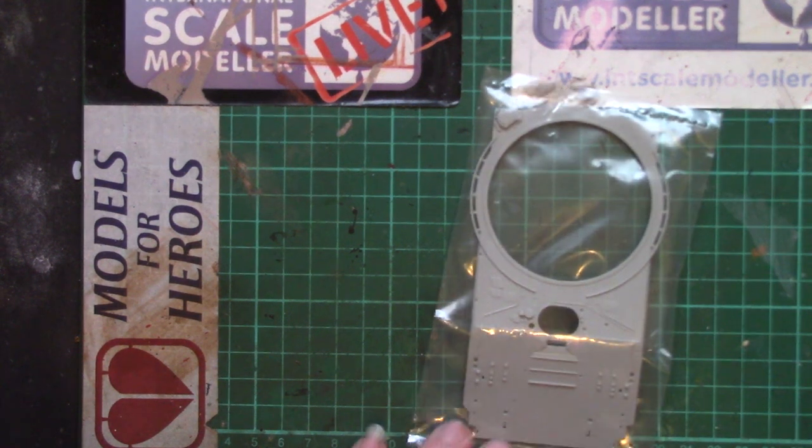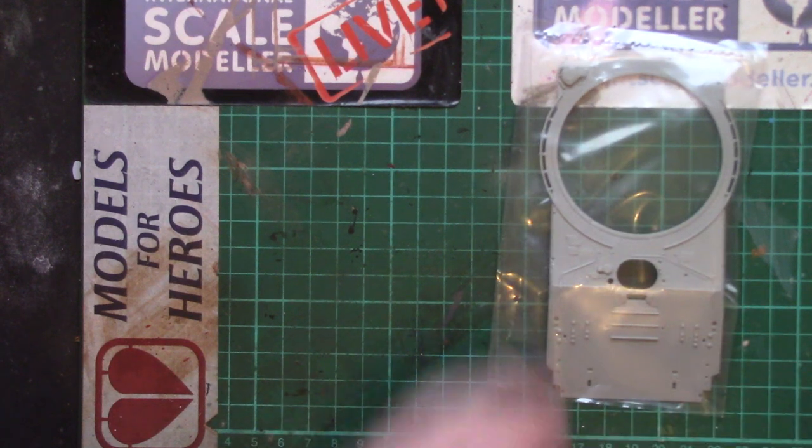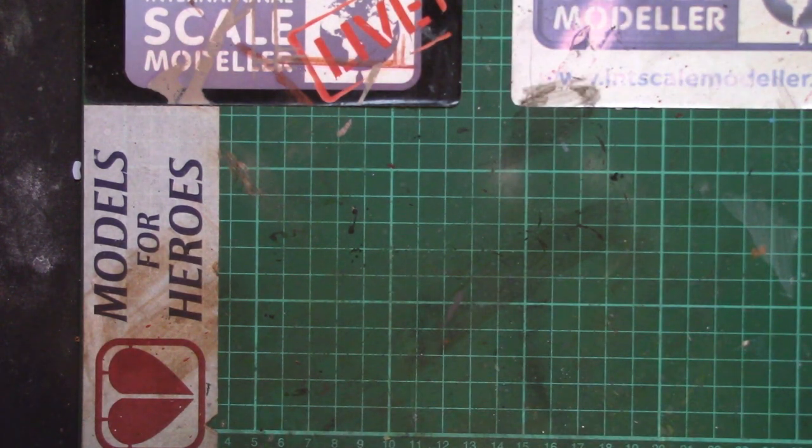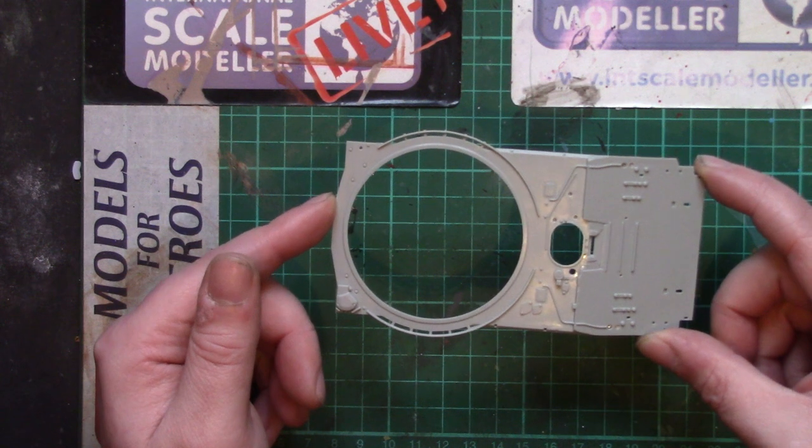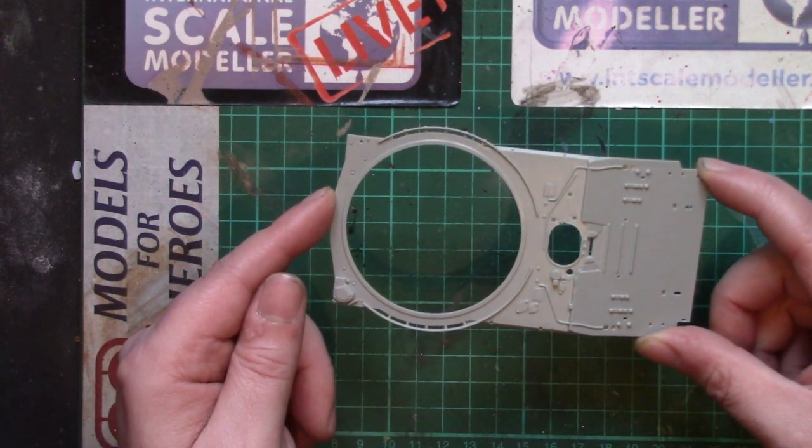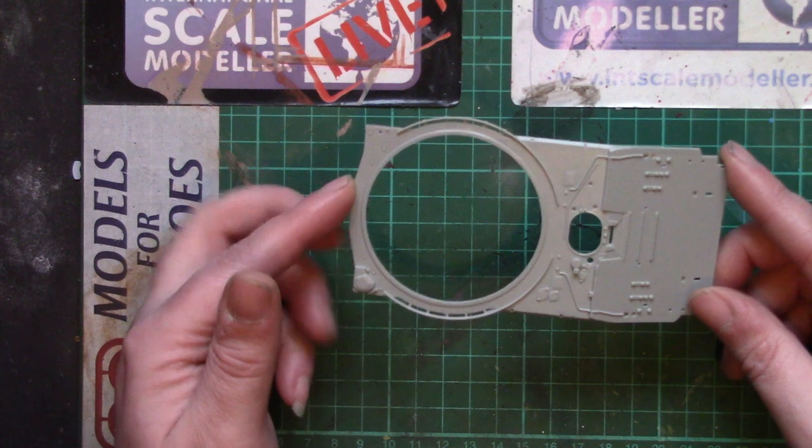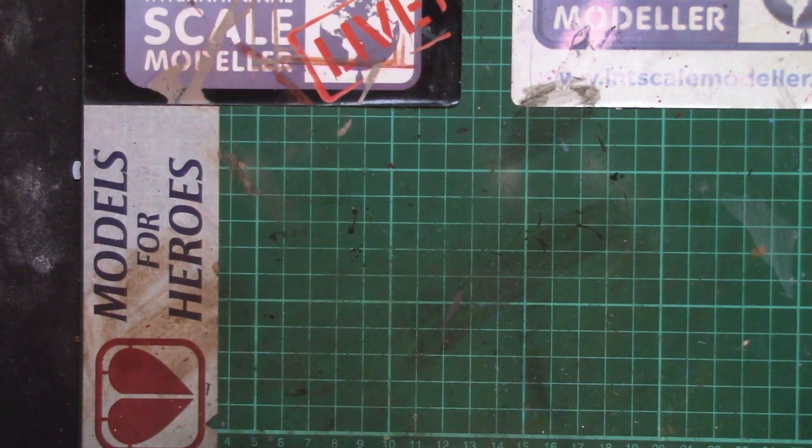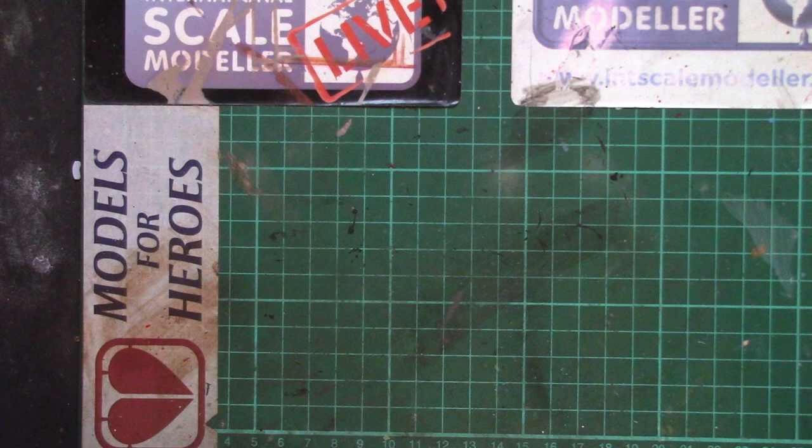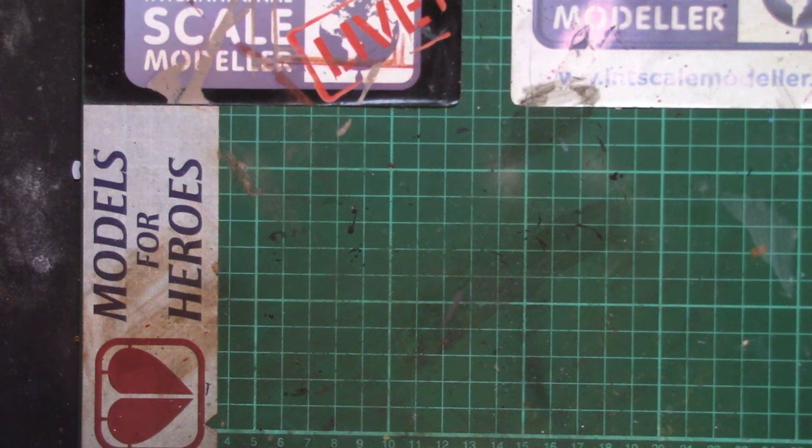The front upper hull. The engine deck will be separate - there's several different versions of the T-72 and the engine deck is where a lot of the differences come. Again we see similar crisp blows of detail, super fine and delicate around the turret ring. I believe that was there to stop it becoming a shot trap and stop the shells getting stuck underneath.